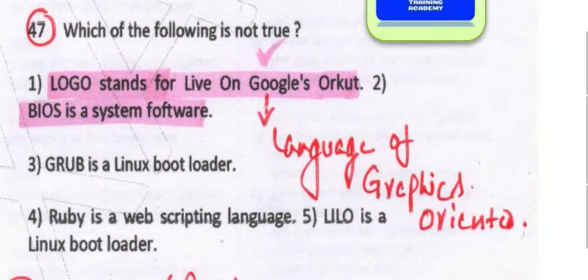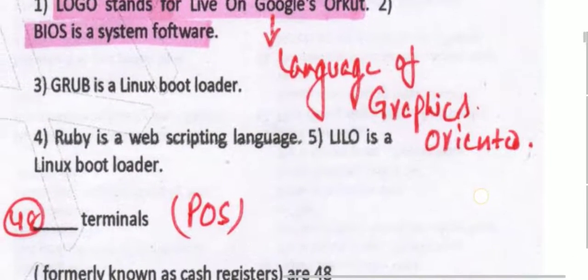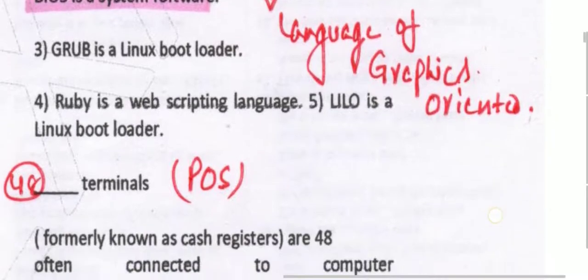Which of the following is not true — LOGO's abbreviation is not correct. The correct abbreviation is Language of Graphics Oriented, but it is given wrongly here. GRUB is a Linux boot loader, Ruby is a web scripting language, LILO is a Linux boot loader — these are all correct, but LOGO's abbreviation is wrong.